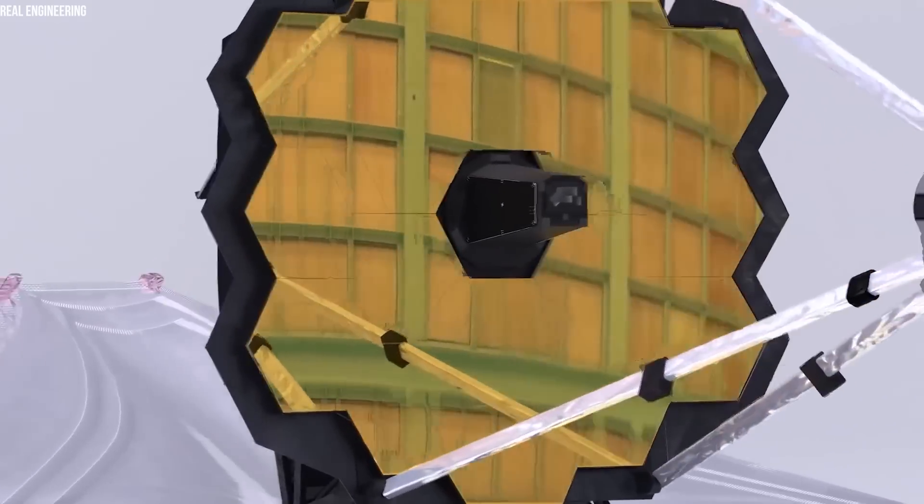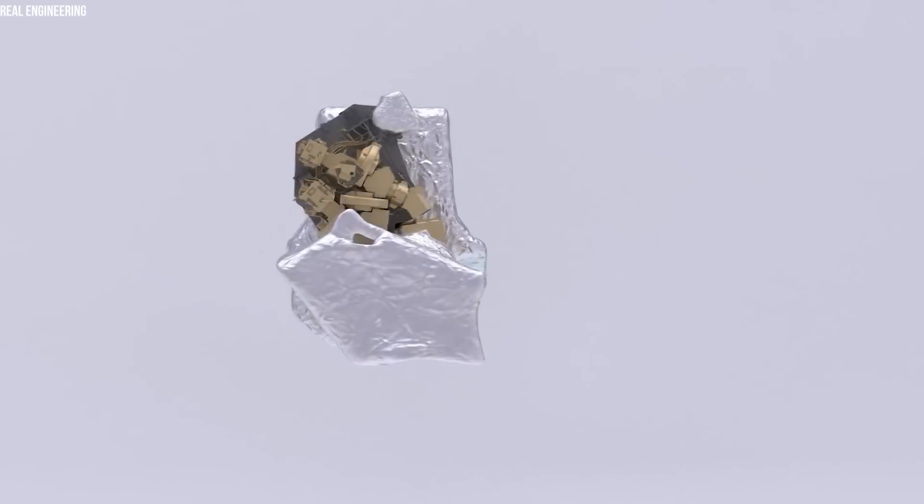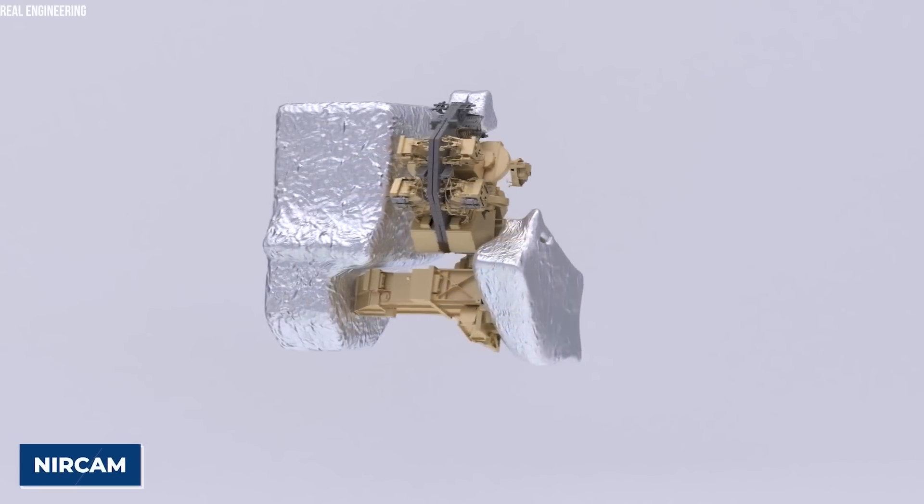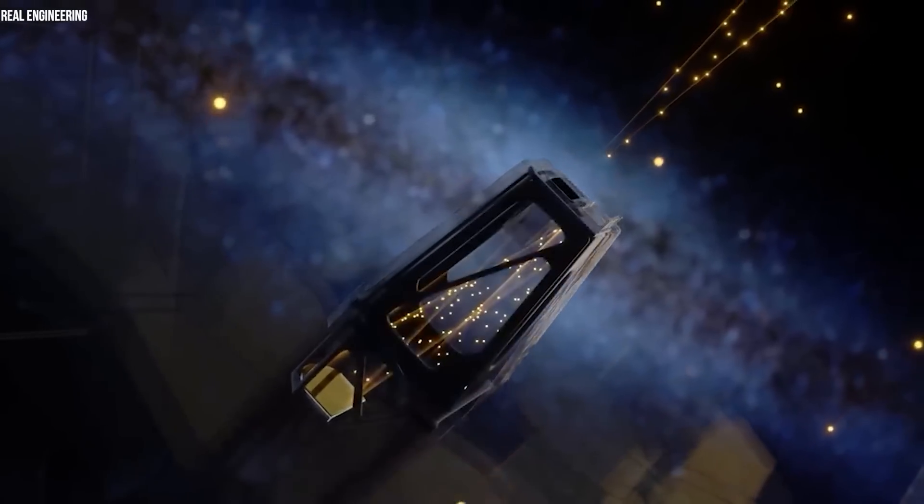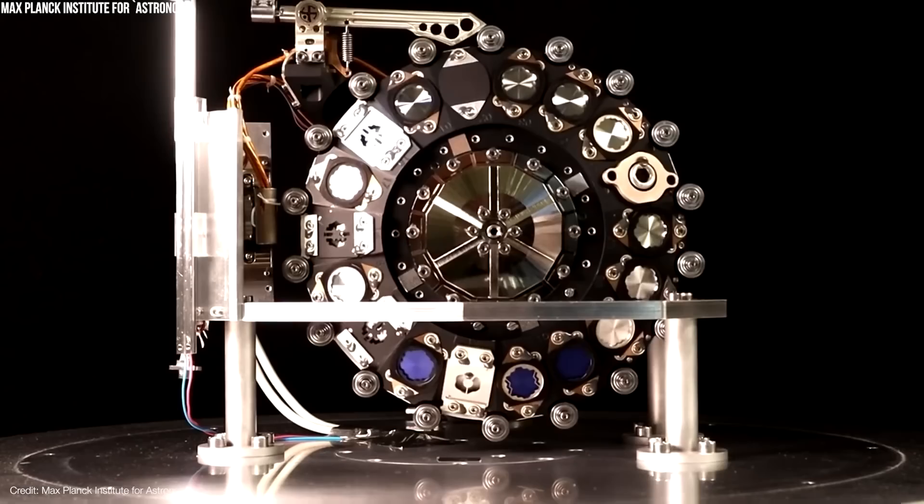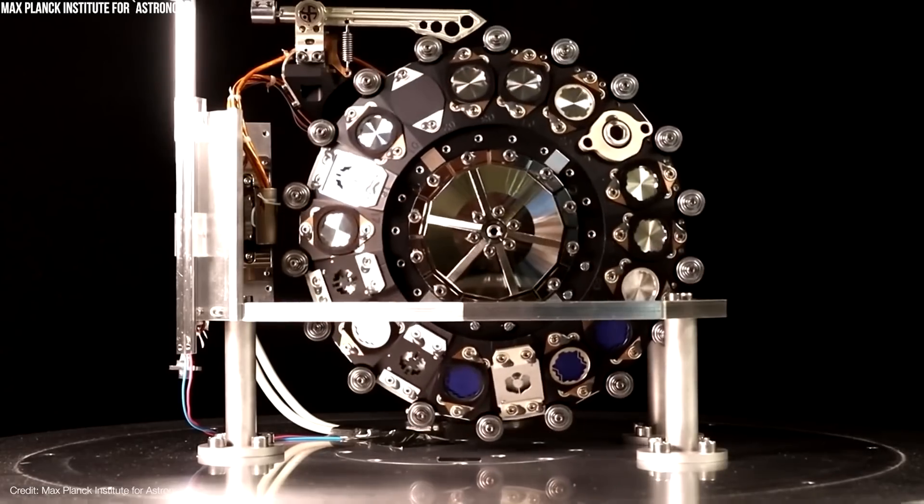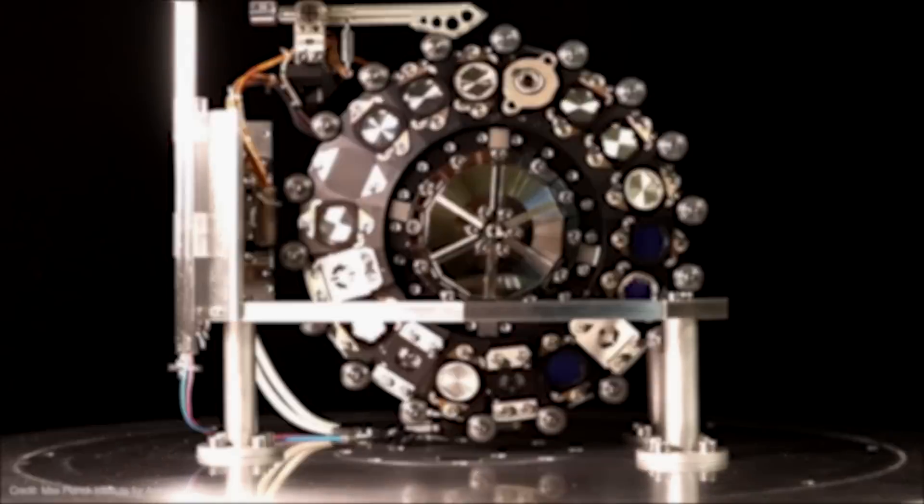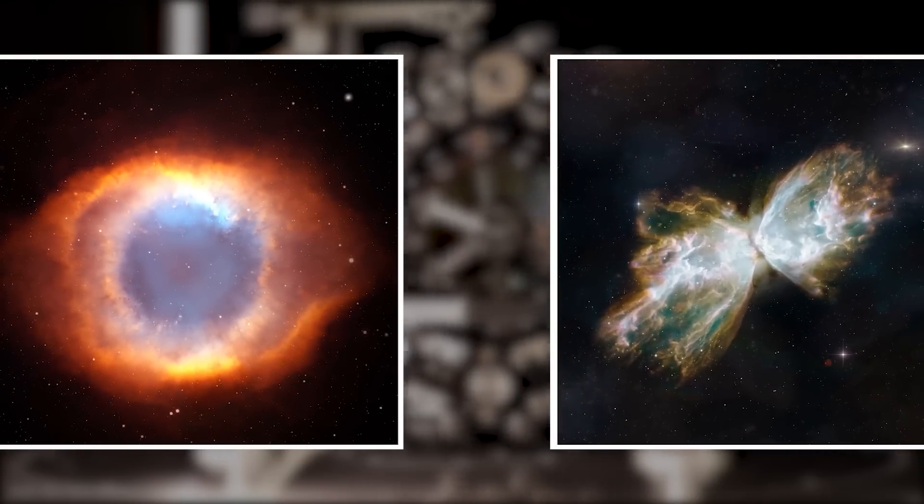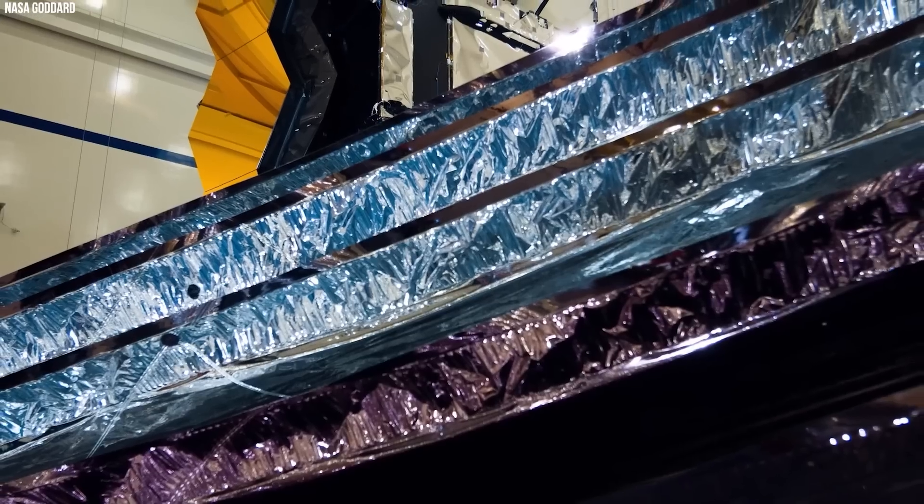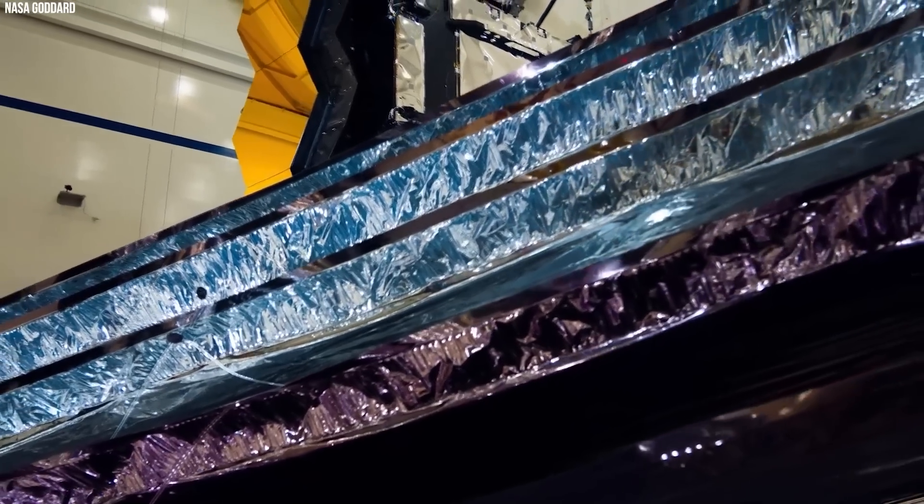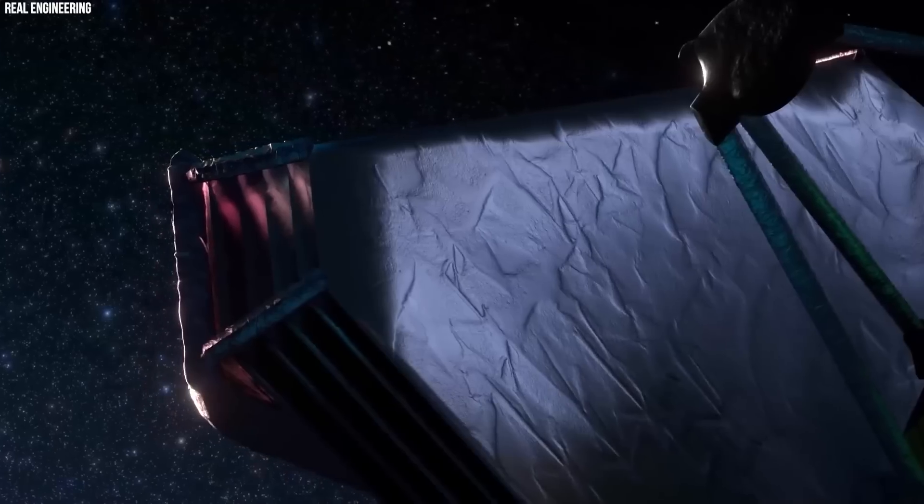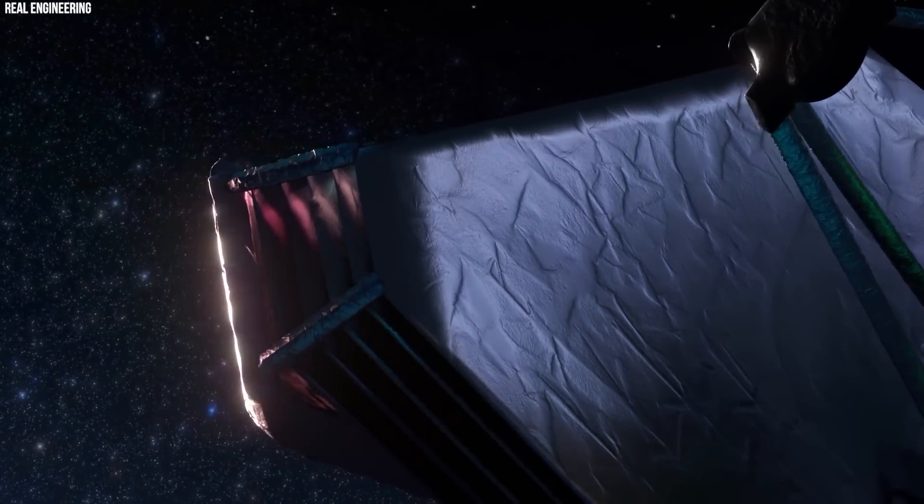The James Webb has two infrared cameras. The first one is the near-infrared camera, also called near-cam, which captures the shorter infrared wavelengths. The second one is the mid-infrared instrument, or MiriCam, which captures the longer infrared wavelengths. The photos vary depending on which camera was used to capture them. It also uses a five-layer sunshield constructed from Kapton-E to block light and heat from the Sun, Moon, and Earth.